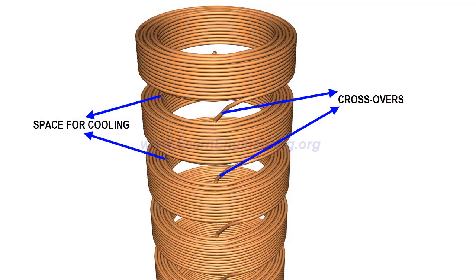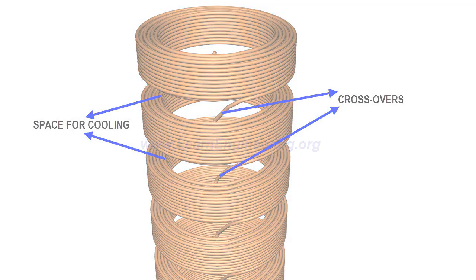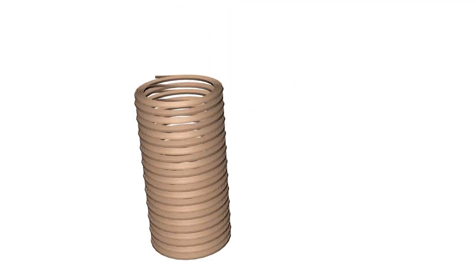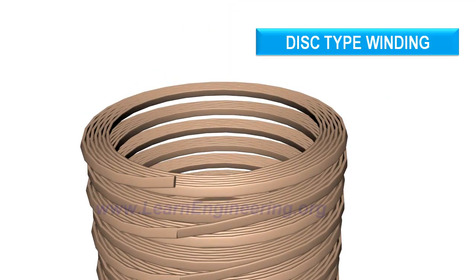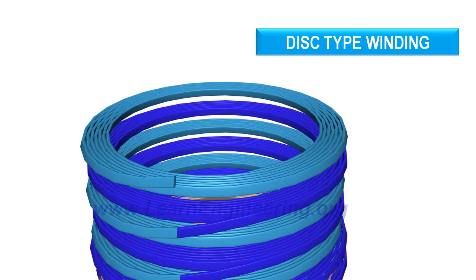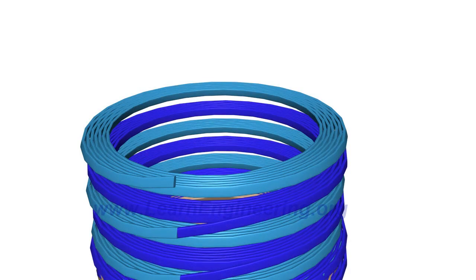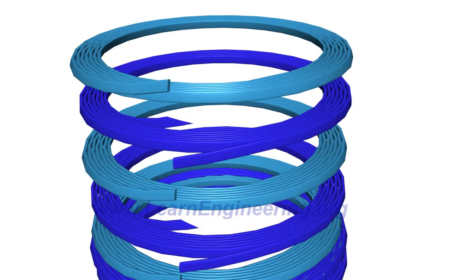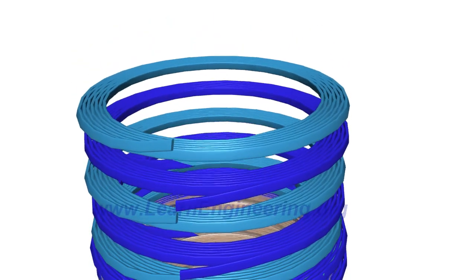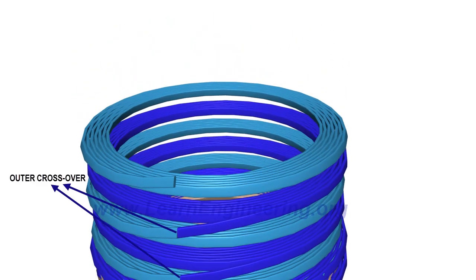Disc type windings are used in transformers with a high power rating. Here, discs are made from spiraling conductors at the same place. Such alternating discs are connected in series using inner and outer crossovers.